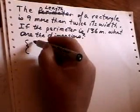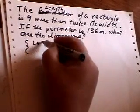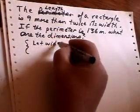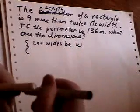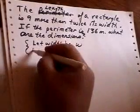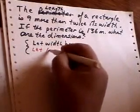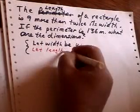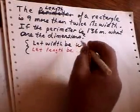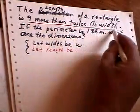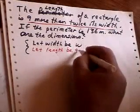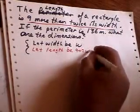One way is we can say let width be W. Let length be, and here it says it's nine more than twice its width. So I could say nine more than twice its width.